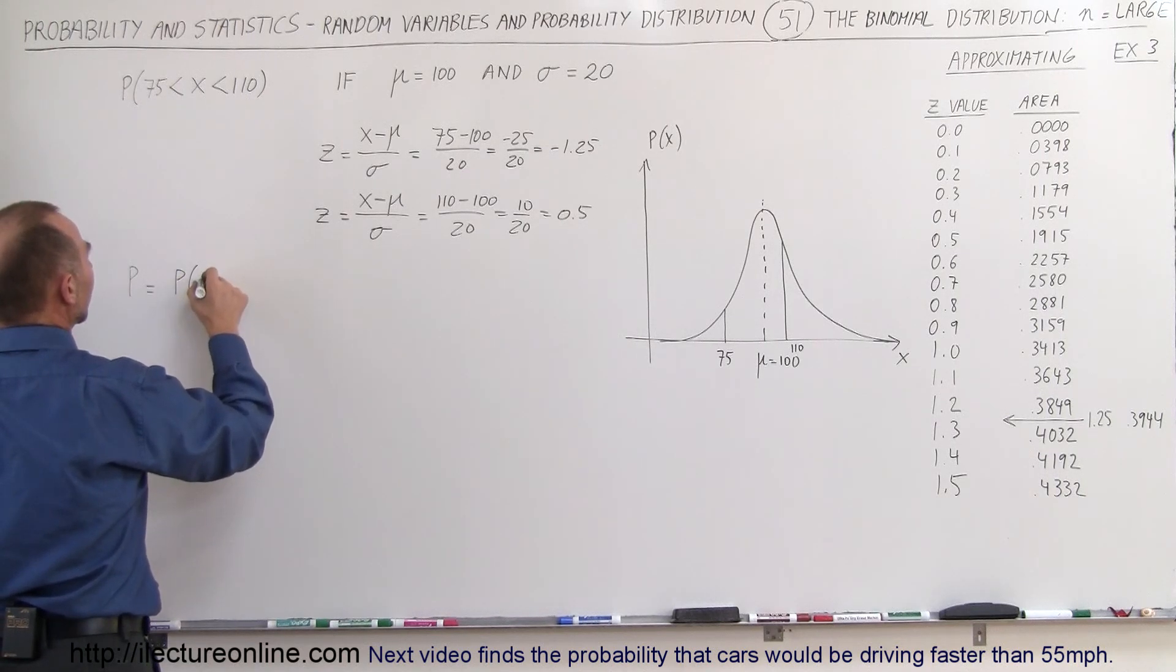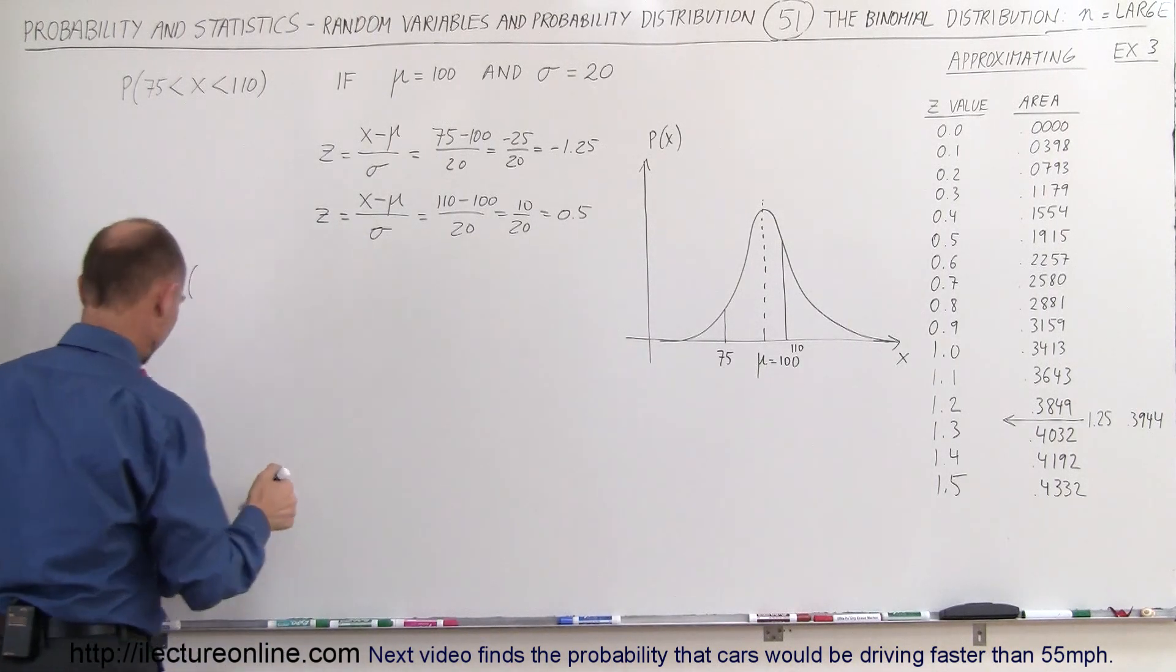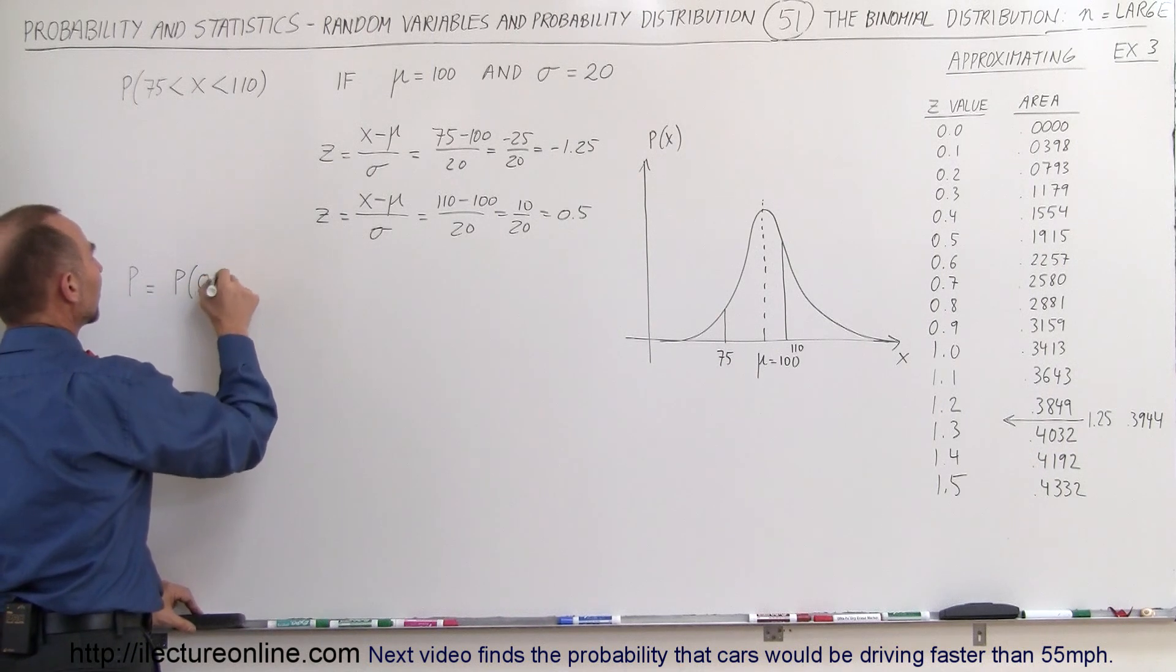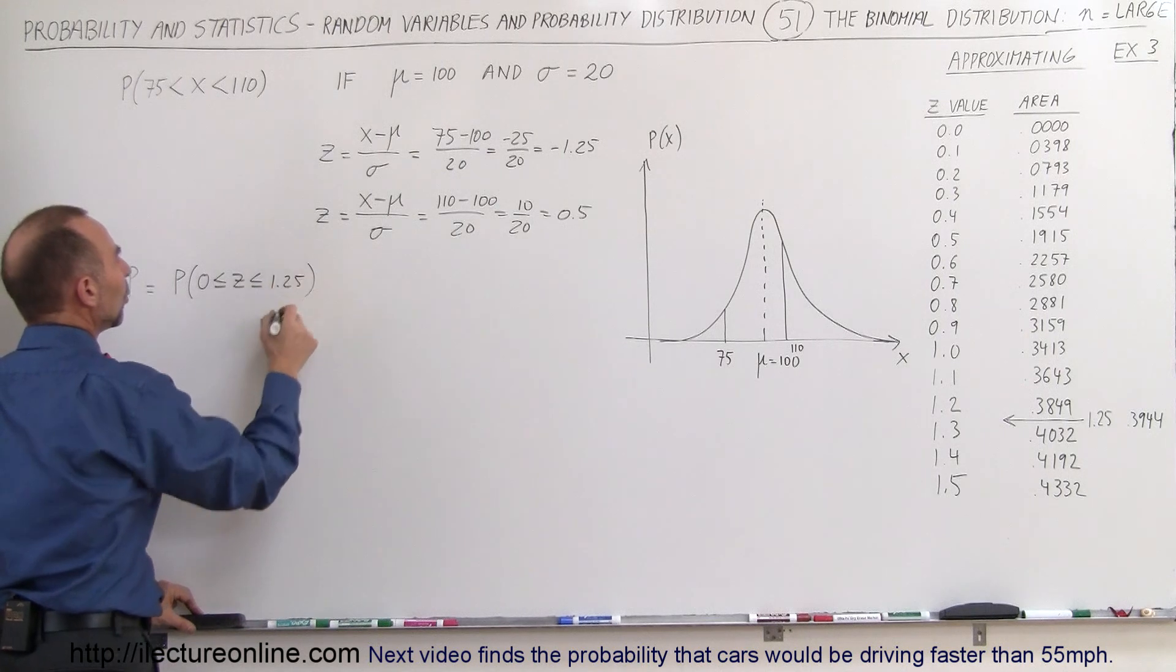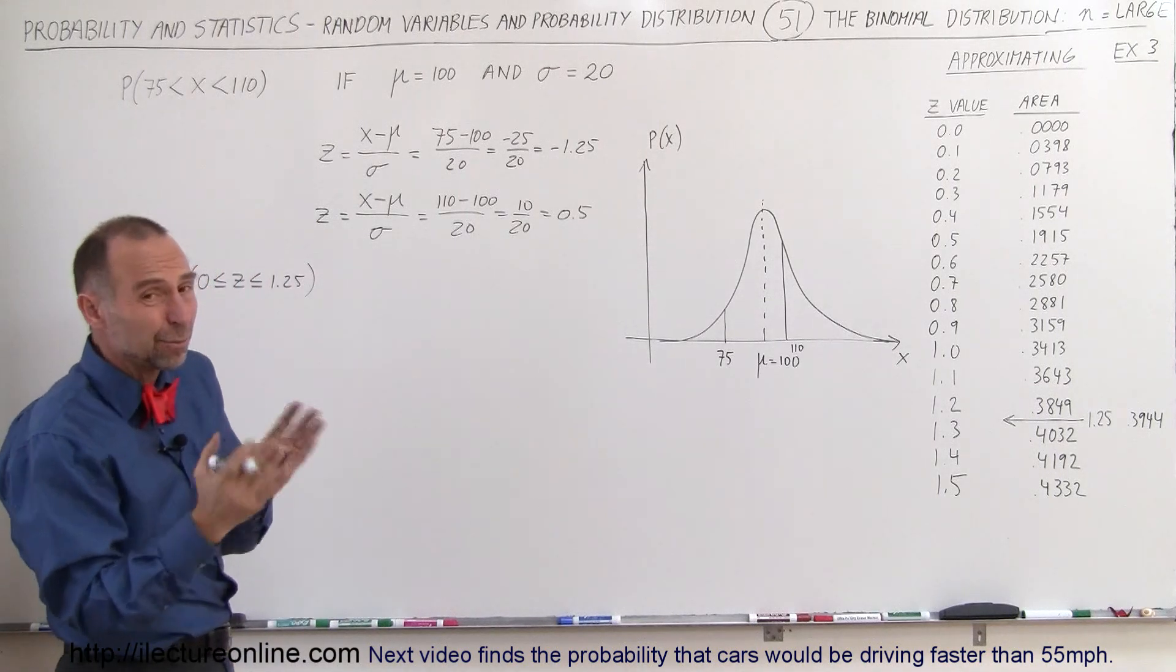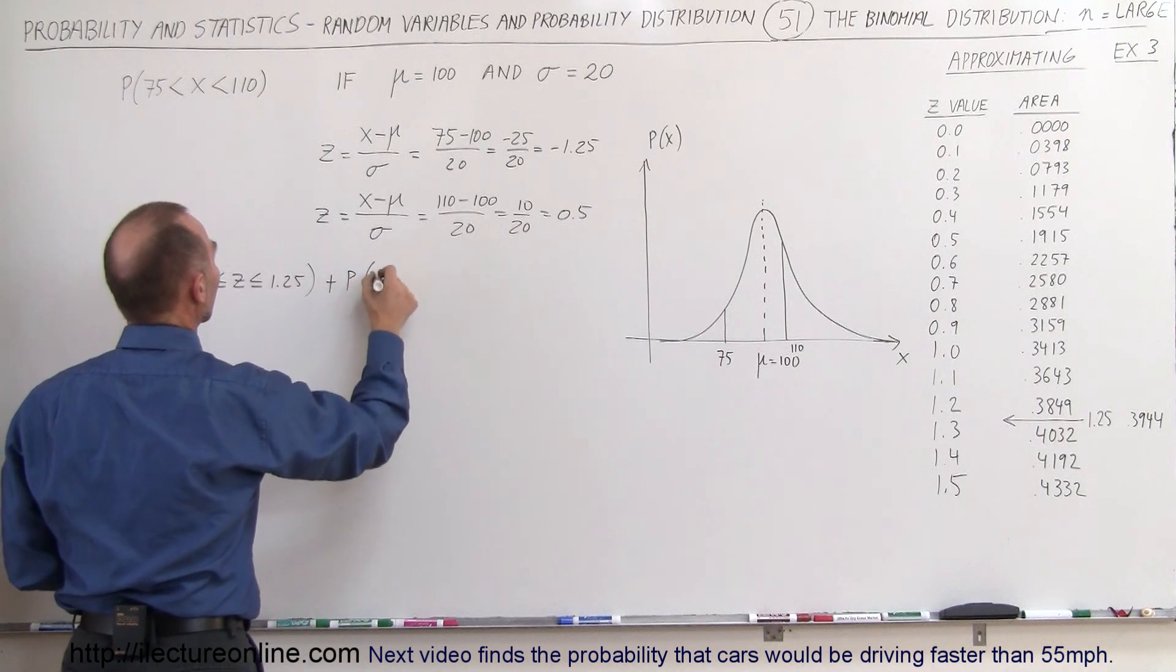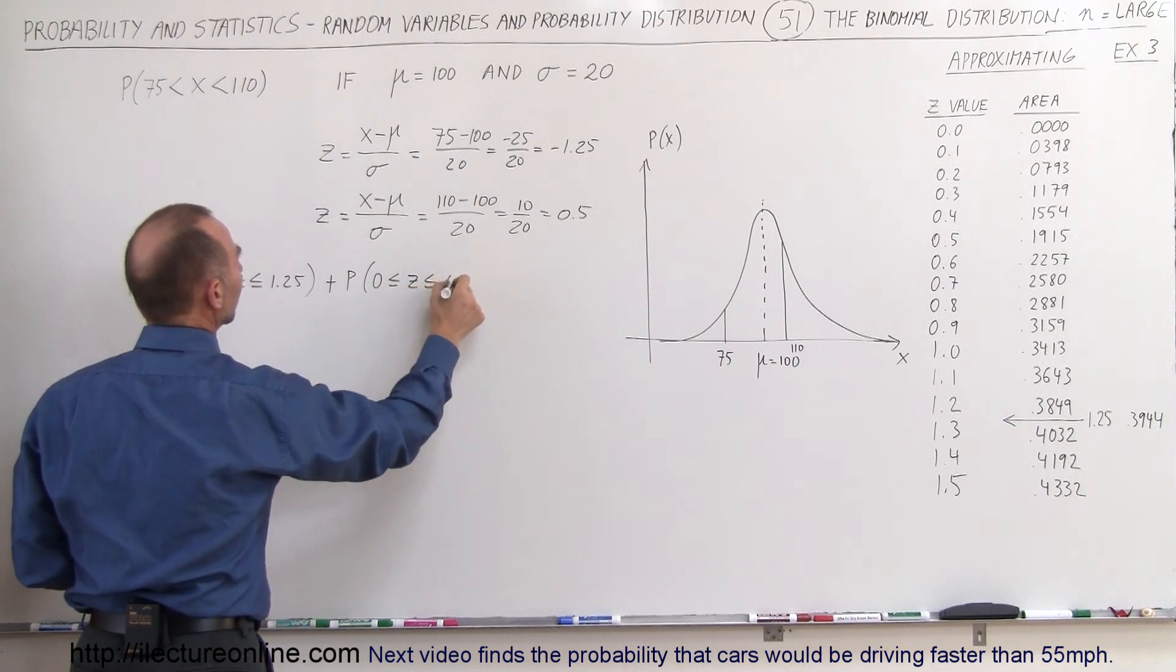Or not in this case, a better way to look at it, yes, it would be better to say it this way. So the probability that 0 is less than or equal to z is less than or equal to 1.25, which will give us this area right here. Again, it doesn't matter if it's negative or positive because the area on both sides of the middle is the same, plus the probability that z is 0 is less than or equal to 0.5.